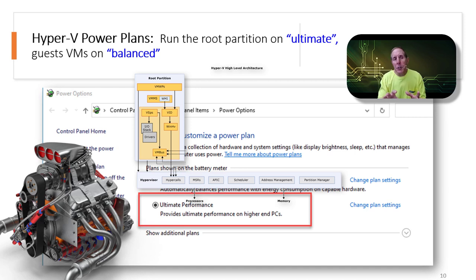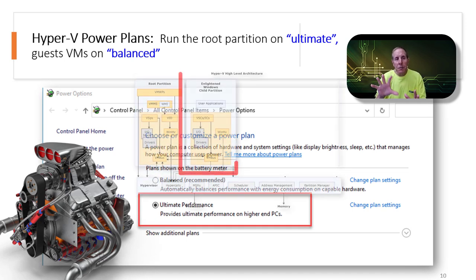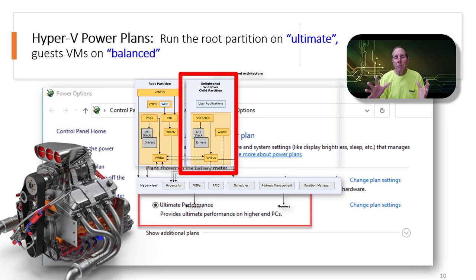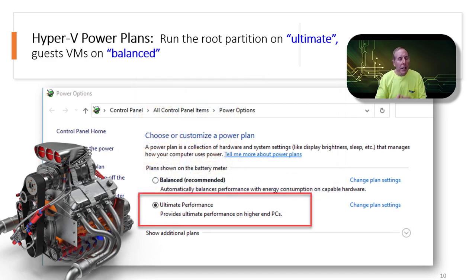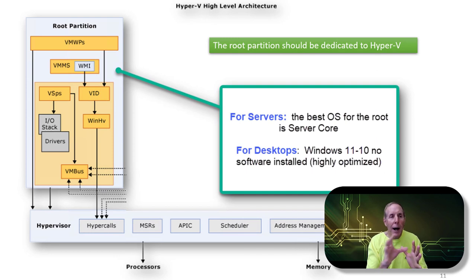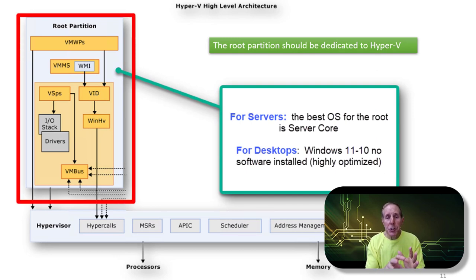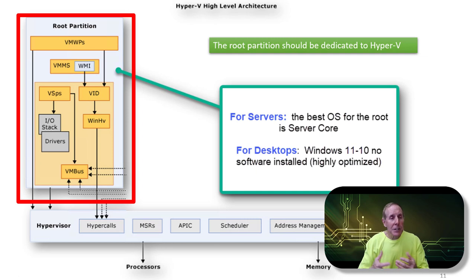When thinking about power management, for your parent or root partition you want the hardware running full blast — no power management whatsoever. On the child partitions, it depends on what you have running; if you have Windows 10 or Windows 11, you can run balanced power management. Keep in mind what operating system you want in your root partition: for servers, best is Server Core; for desktops, Windows 10 or 11. I would keep Windows 10 and 11 in the root partition highly optimized with as little software installed as possible.